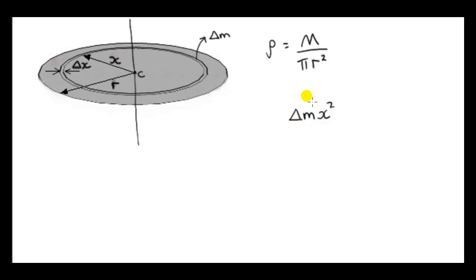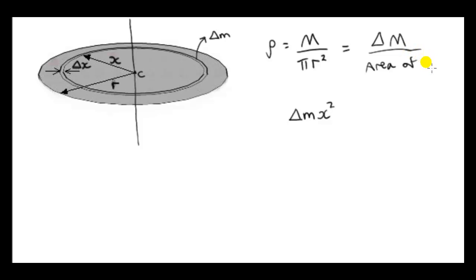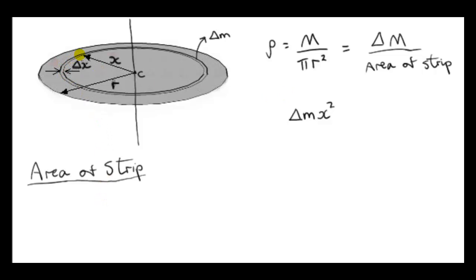We want to write the moment of inertia of the mass element in terms of x only. We use the fact that a mass element is proportional to the area. The density doesn't change. So if the mass is delta m, we need to divide by the area of that element — call it a strip. This is a constant since the disk is uniform. How do we get the area of this strip in terms of x and delta x?